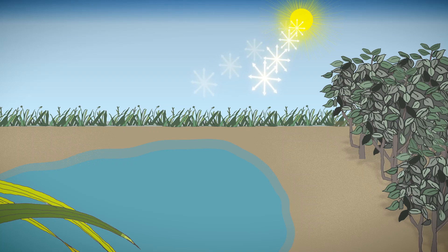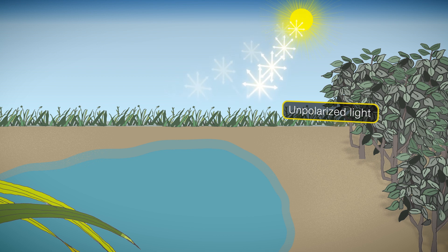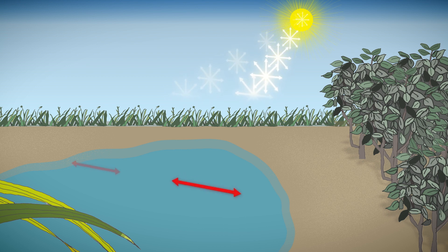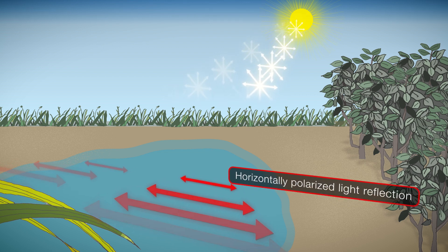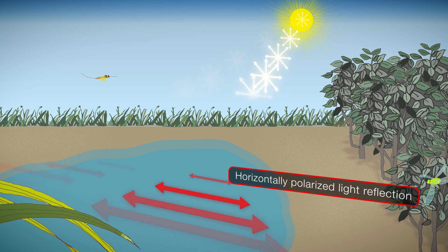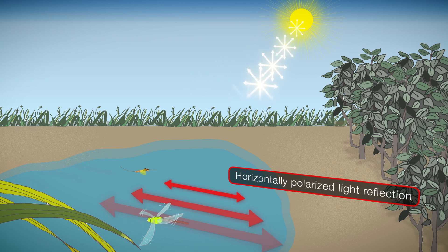Direct sunlight is unpolarized light, including various e-vectors. But once the sunlight reflects off small particles, objects, and water bodies, a part of the reflected light is linearly polarized, in which a certain e-vector orientation is dominant. In particular, the reflection of water bodies is horizontally polarized, and many insects actually use the horizontally polarized light to either seek out or avoid water habitats.